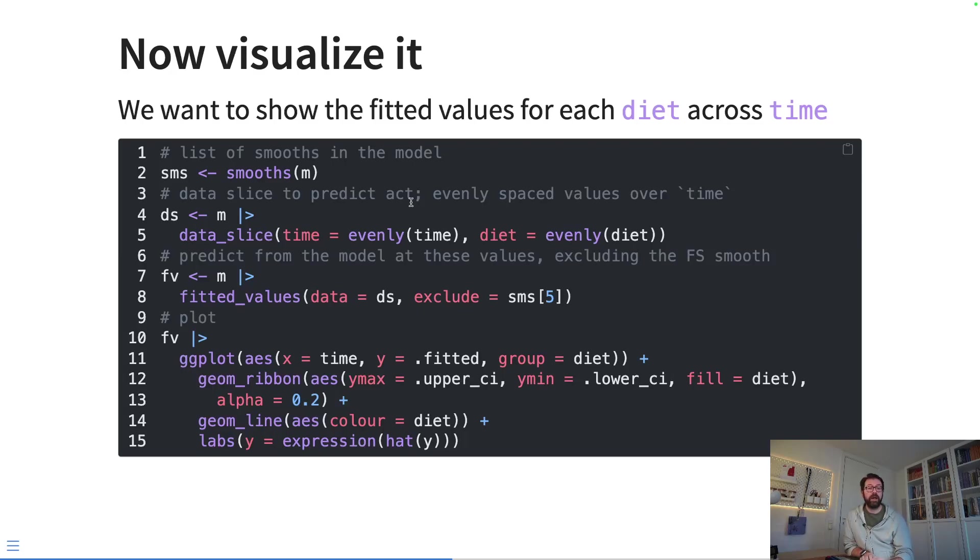If we do that, then obviously one of the first things that you want to do when you visualize, or when you've estimated your GAM, you want to visualize it. To do that, we need to go through a few steps. So if we want to visualize what is the effect of diet across time that's been estimated by the model, we need to remove the growth rates of the individual chicks.